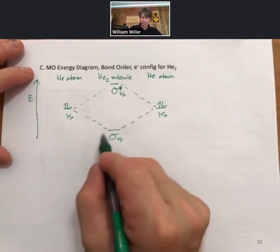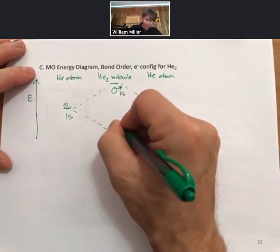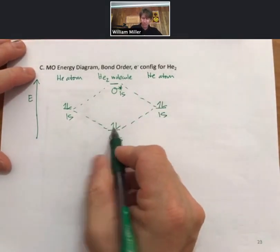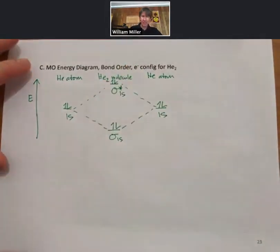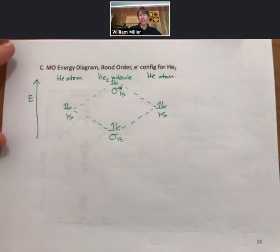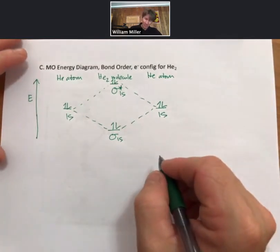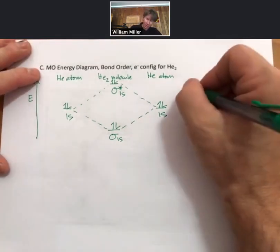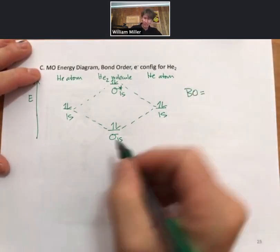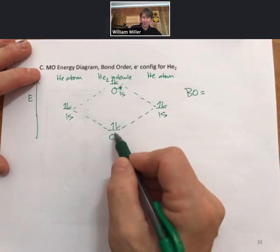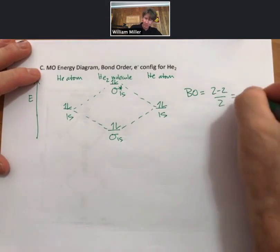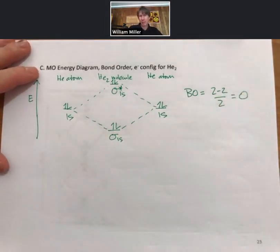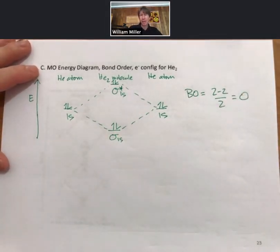We can connect them up with dashes. This time when we place the electrons in, we still place them in the lowest energy position first, one, two. But we have four total electrons, and so we do fill the antibonding molecular orbital.